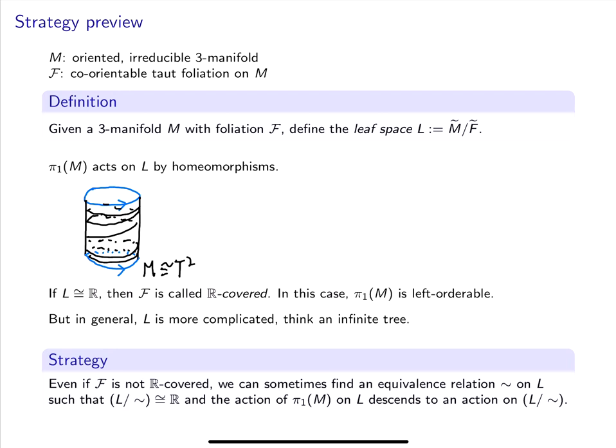In the universal cover we see an integer's worth of lifts of the blue compact leaf and the remaining leaves are shaped like this. In this case, the foliation on the universal cover is topologically equivalent to the standard foliation, ℝ² × ℝ. So, the leaf space, M̃/F̃, is a real line with an integer's worth of lifts of the blue circle. In this case, the leaf space is homeomorphic to ℝ.